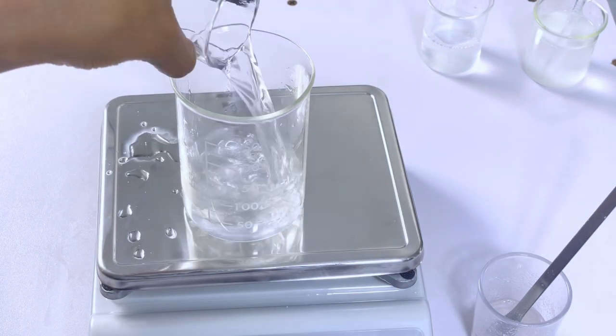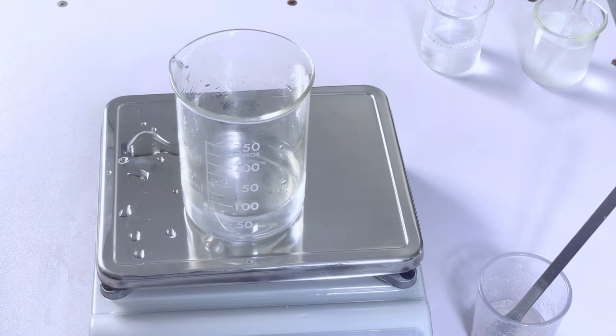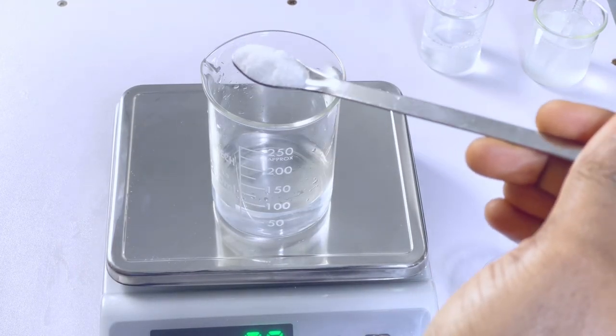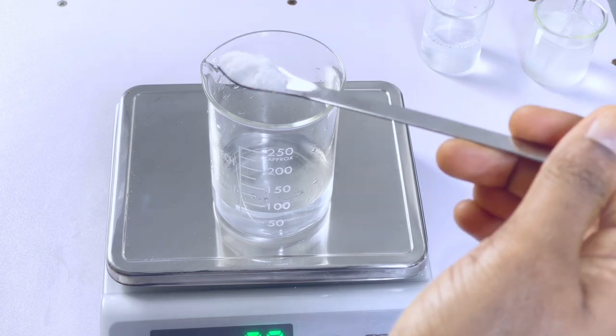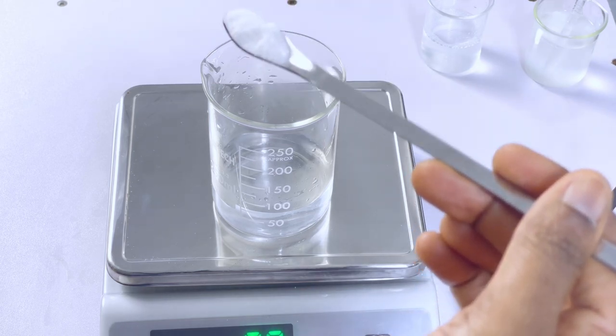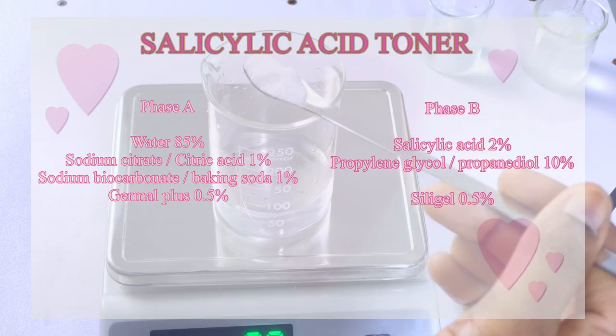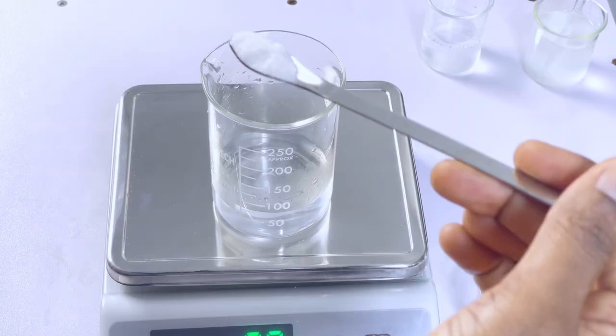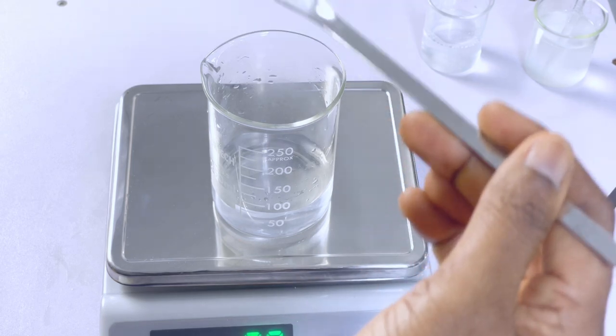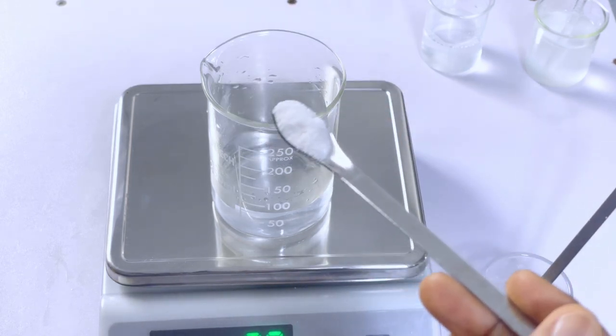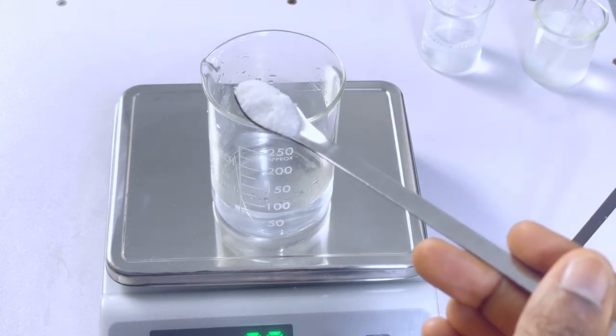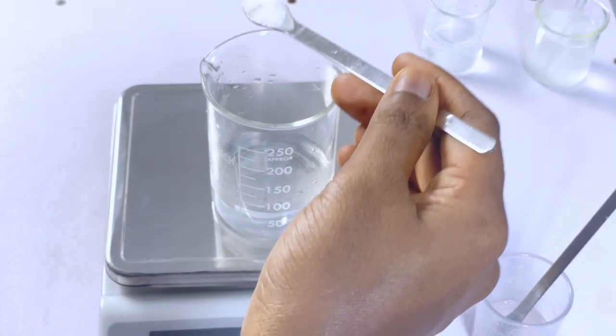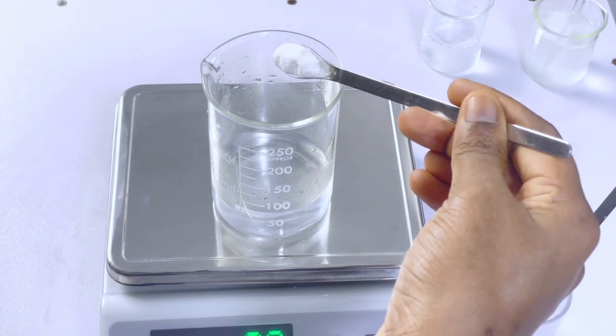Now I'm going to add citric acid. What citric acid does here is to keep the salicylic acid from recrystallizing. Salicylic acid is very insoluble in water - it has a very low solubility in water. So to keep the salicylic acid suspended in the water and clear we need citric acid. But if you have sodium citrate that is even perfect.